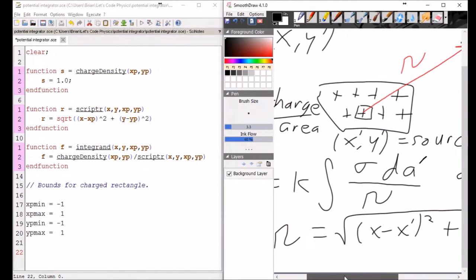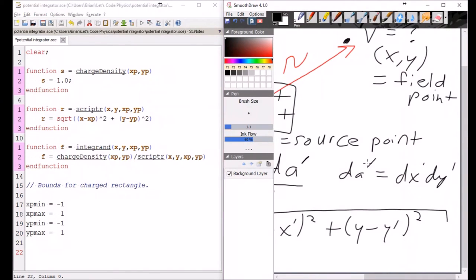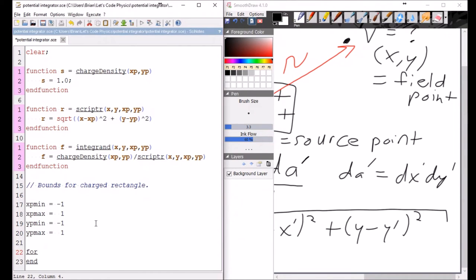So now what I need to do is set up this integral. So this is a double integral. Since it's a double integral, I need to have two loops. I need to have a loop over x prime, and I need to have a loop over y prime. So I need to say for x prime equal to x min in steps of dx prime until x max. So I need to define my x prime.